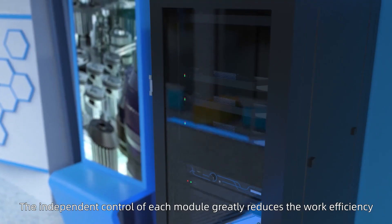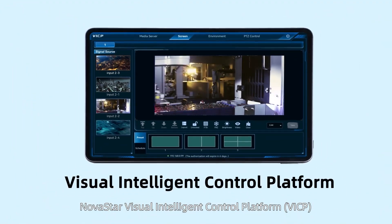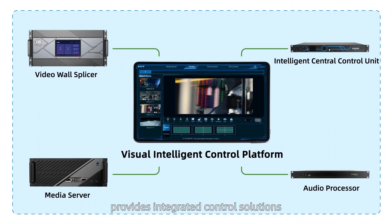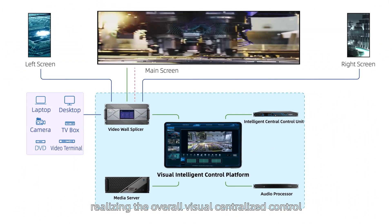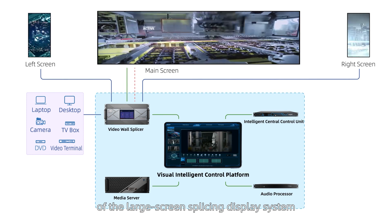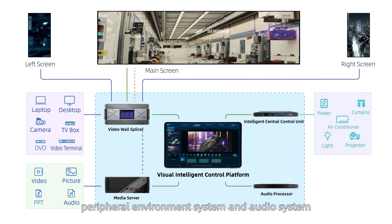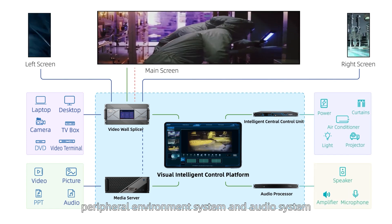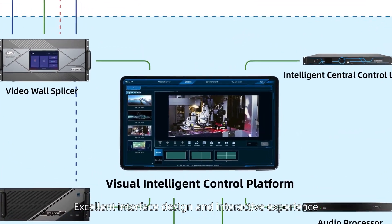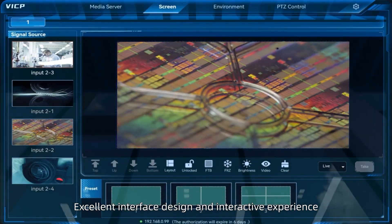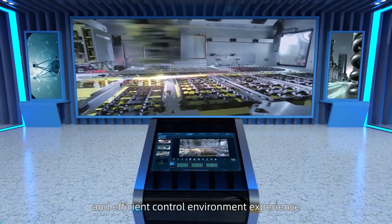Novastar Visual Intelligent Control Platform provides integrated control solutions, realizing the overall visual centralized control of the large screen splicing display system, multimedia broadcast control system, peripheral environment system, and audio system — in order to achieve what you see is what you get. Excellent interface design and interactive experience provide users with a more intelligent and efficient control environment.